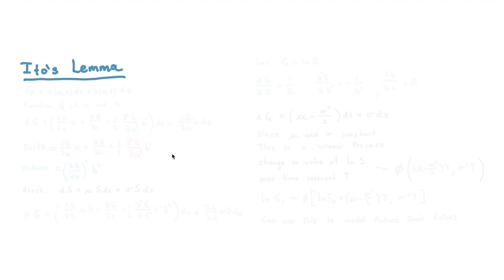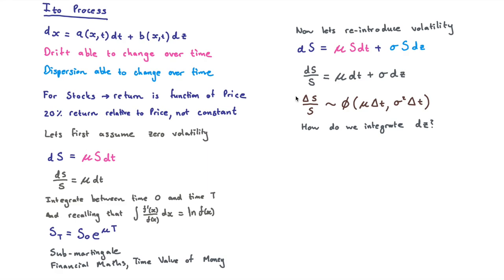Hi everyone, it's MJ and in this video I'm going to attempt to explain what Ito's lemma is. Essentially, why do we need Ito's lemma? Because with Ito processes, how do we integrate when we have this Brownian motion function over here?